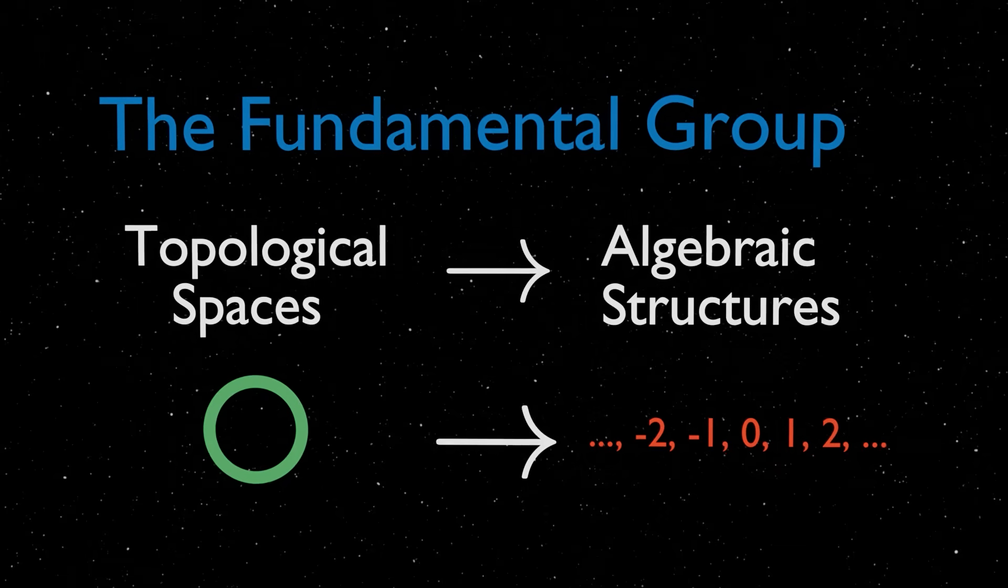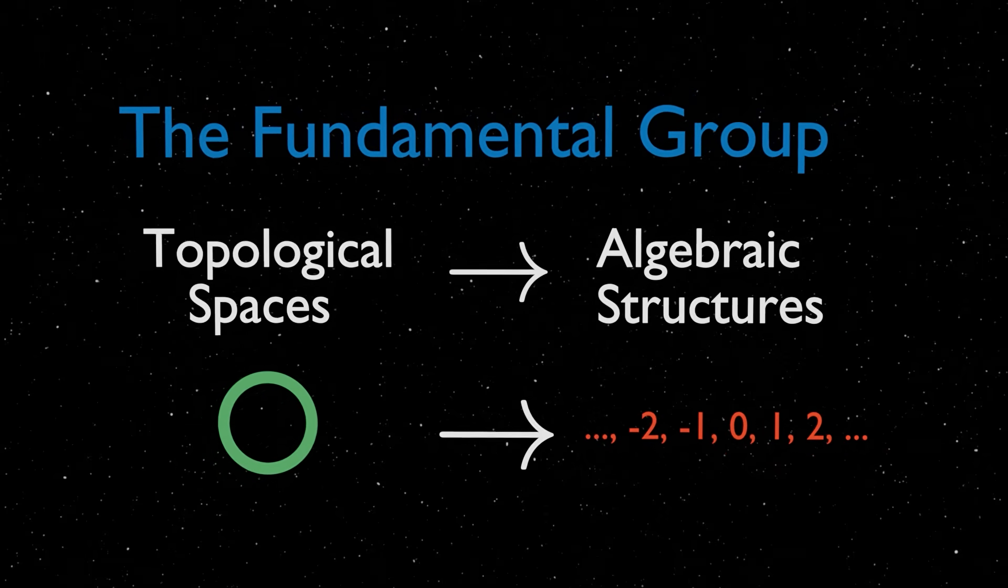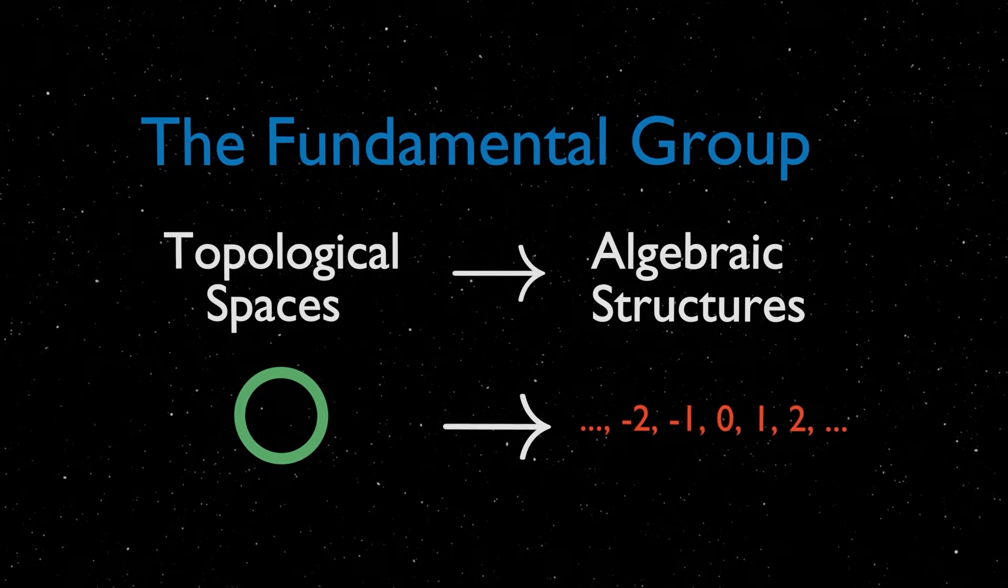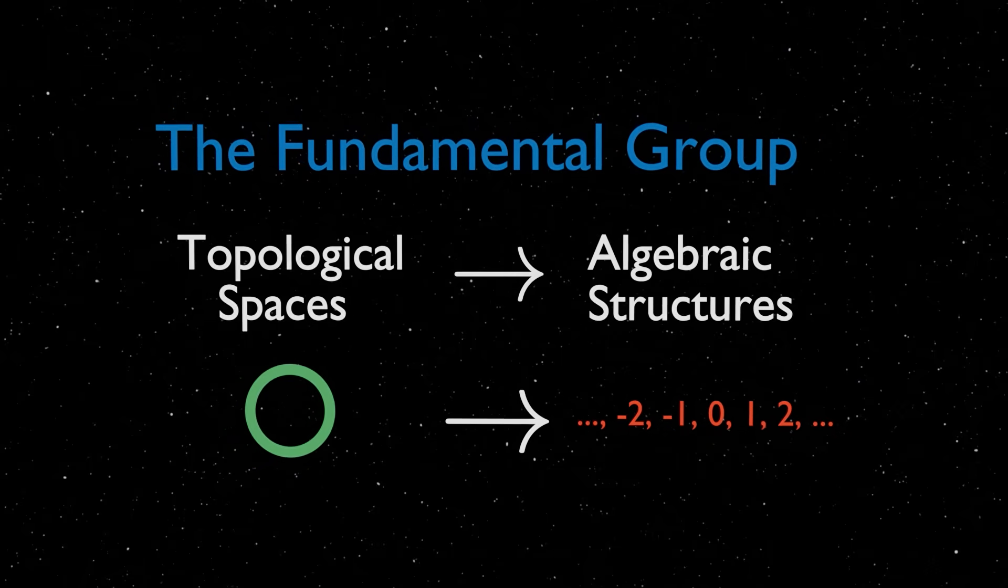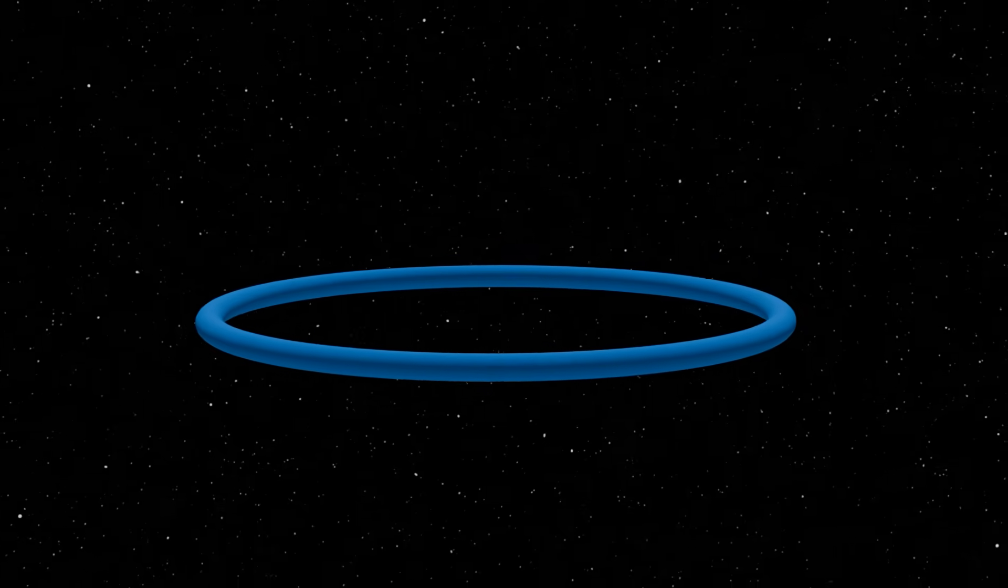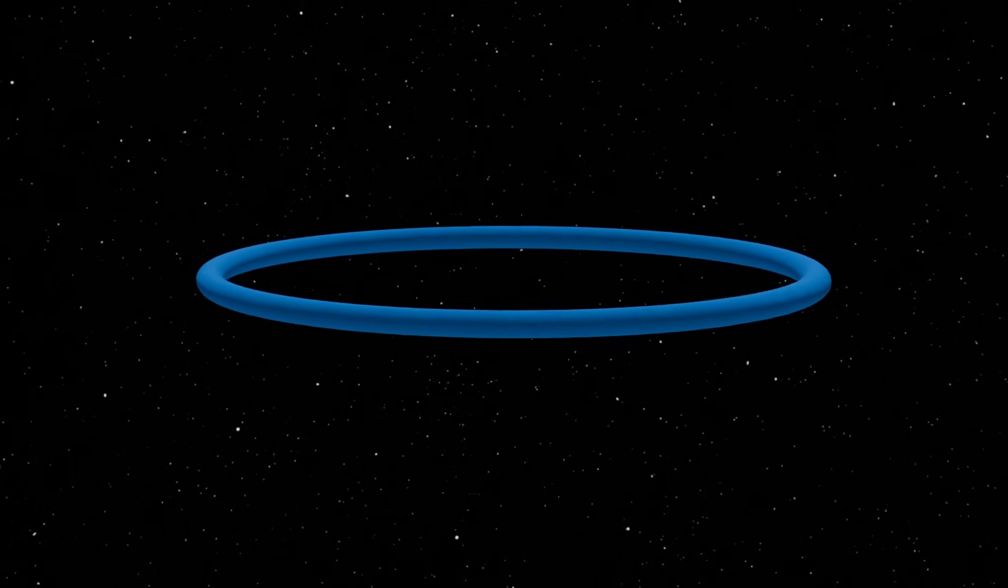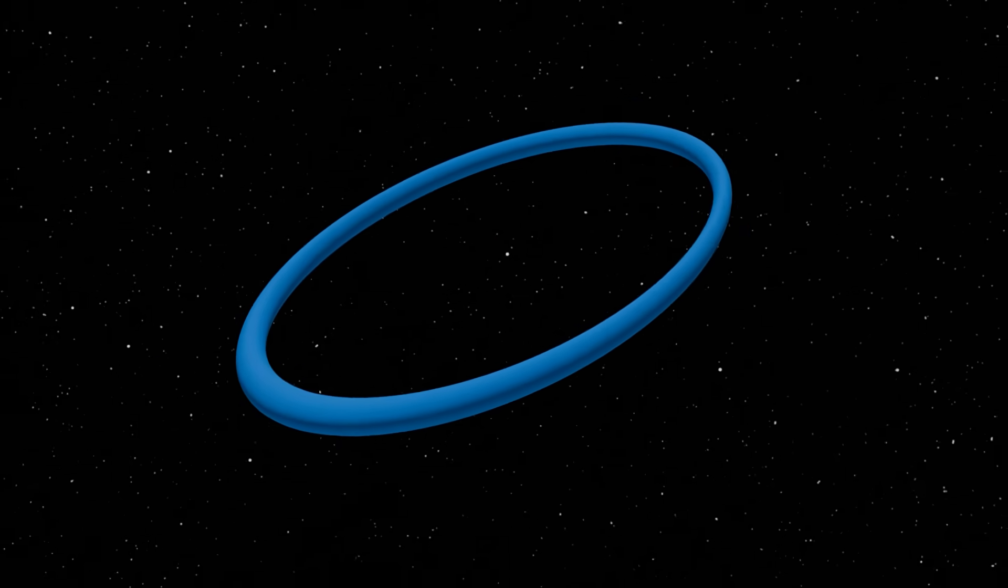Essentially, the fundamental group is a way of assigning an algebraic structure to every topological space. The way that we do this is by observing the behavior of loops on a topological space.